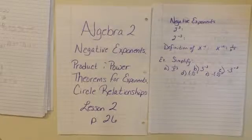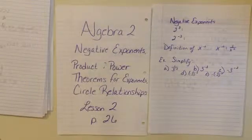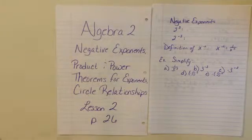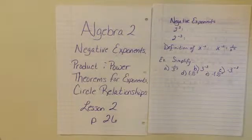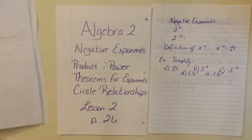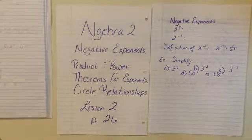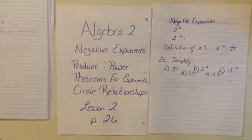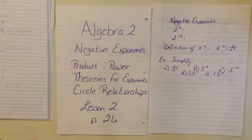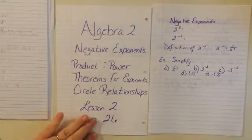Hi, this is Algebra 2, Lesson 2. We're going to talk about negative exponents, the product and power theorems for exponents, and circle relationships. We're starting on page 26.